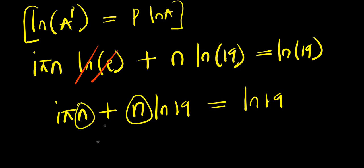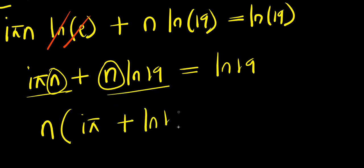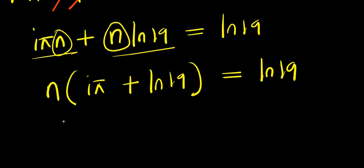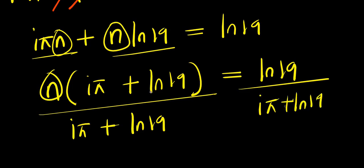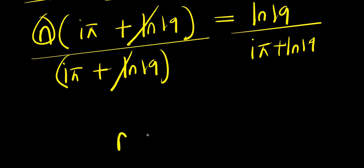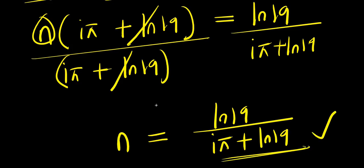There's an n in both terms, so we can factor that out. We have n times the quantity i times pi plus natural log of 19, equals natural log of 19. Making n the subject, we divide both sides by i times pi plus natural log of 19. So n equals natural log of 19, divided by i times pi plus natural log of 19. That is our value for n.